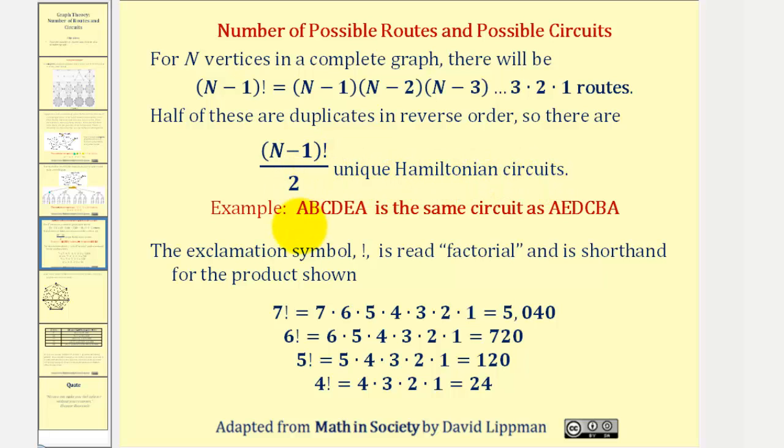For example, the circuit ABCDEA would be the same circuit in reverse order as AEDCBA. And again, just to review, this exclamation symbol is read factorial and is shorthand for the products seen here below.